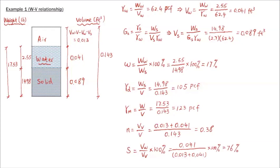So 76% is the degree of saturation — the last quantity we were looking for. That's example one. As mentioned, the key in solving any weight-volume relationship problem is to complete the phase diagram. Once you have all the weights and volumes filled in, everything else is just applying basic definitions.